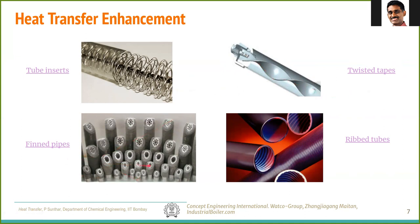The third case is finned pipes, where fins protrude inside the pipe — similar to the conduction fins discussed earlier — increasing the internal surface area and thus heat transfer. However, both tube inserts and internal fins cause a severe pressure drop. A third variant called rib tubes has ribs along the inside; they don't block the flow as much and offer a compromise between pressure drop and heat transfer improvement.